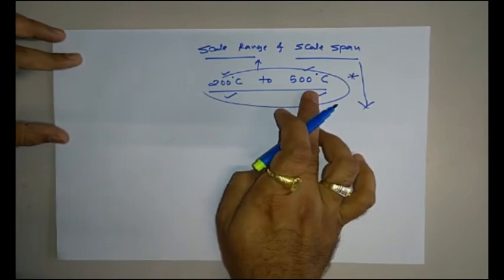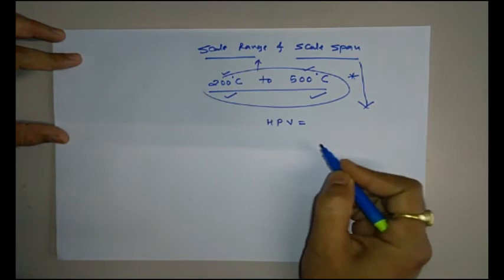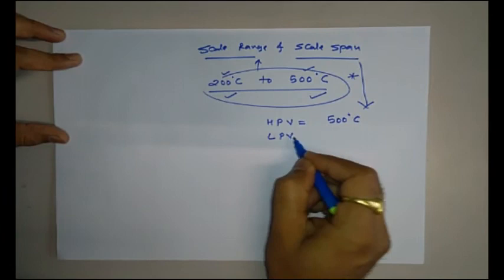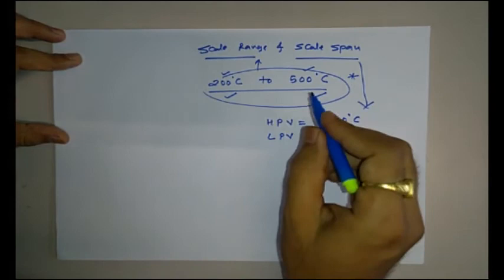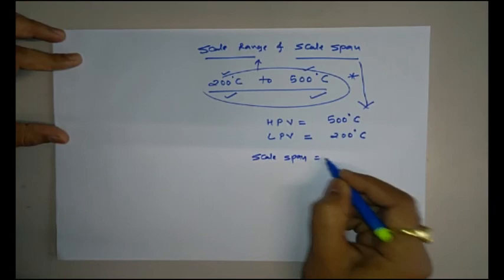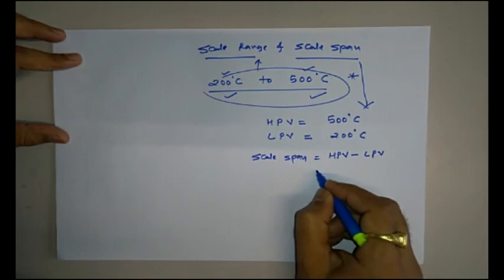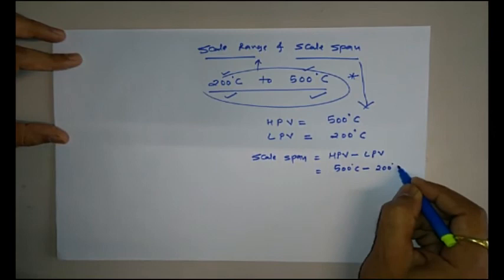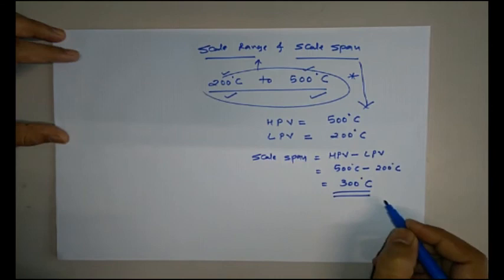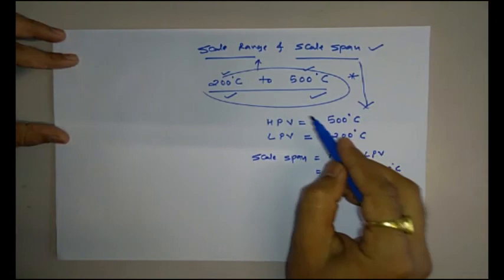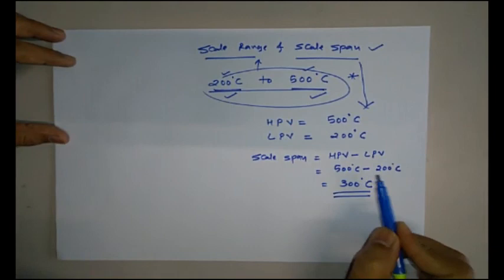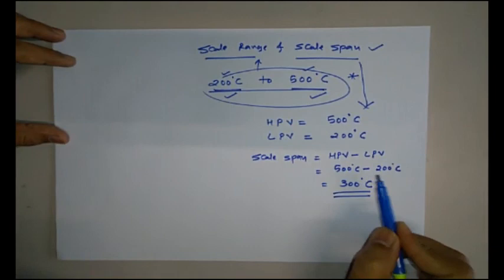For the thermometer calibrated from 200°C to 500°C, the highest measurable value is 500°C and the lowest is 200°C. Therefore, the scale span equals 500°C minus 200°C, which is 300°C. So the scale span of this thermometer is 300°C, while its range is from 200°C to 500°C. In the next lecture we will discuss in detail the classification of errors and their analysis.